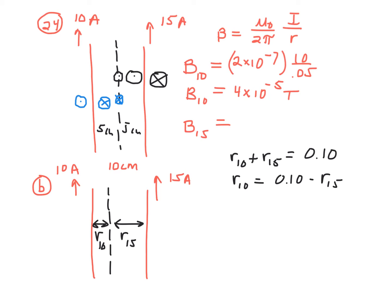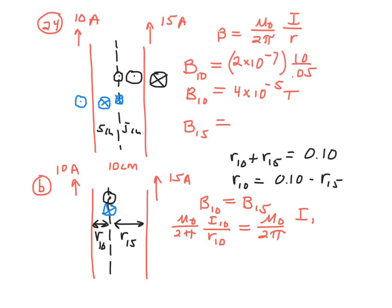The directional fields are the same as in part A. For the 10-amp wire, the magnetic field to the right is toward the floor, represented by the X. For the 15-amp wire, the magnetic field is towards the ceiling, represented by the dot. Those will overlap and cancel out. So we need B sub 10 to equal B sub 15: mu zero over 2 pi times I sub 10 over R sub 10 equals mu zero over 2 pi times I sub 15 divided by R sub 15.